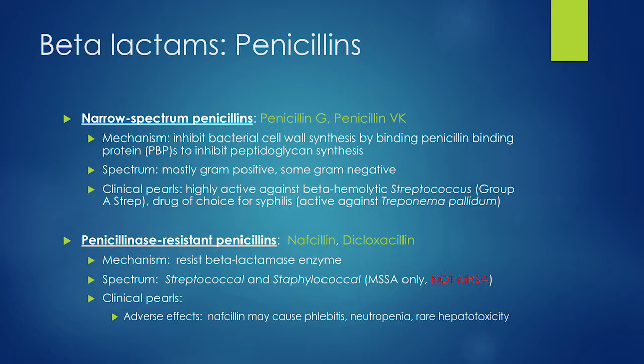Narrow-spectrum penicillins — penicillin G and penicillin VK — were among the first penicillins. Generally, early first-generation agents have more gram positive activity; later generations gain more gram negative coverage. Narrow-spectrum penicillins have great gram positive coverage such as Strep and some Staph aureus, but not MRSA.